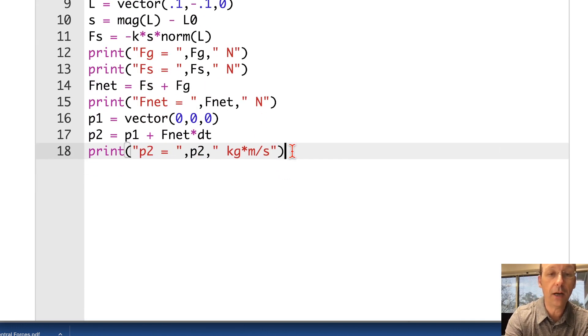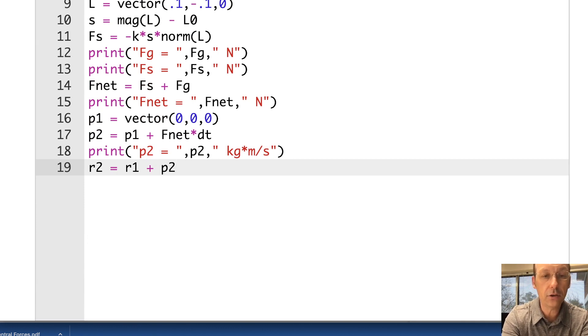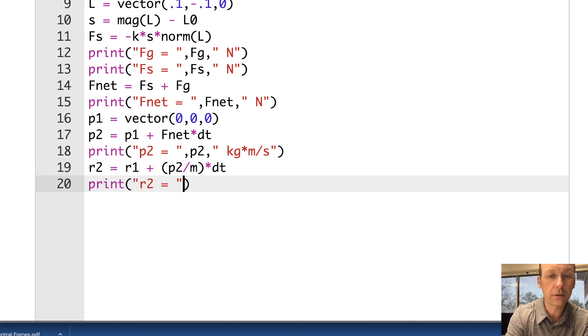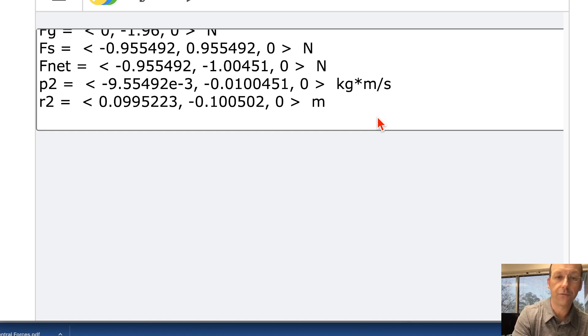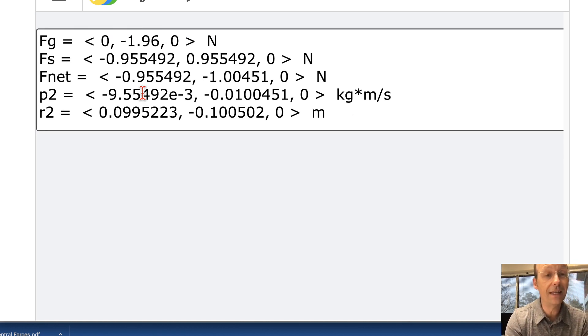Finally, I want to find my final position. R2 is equal to R1 plus P2 over M times DT. Print R2 equals R2 meters. Done. That's the final position. And you'll notice it did not move a ton. It was at 0.1, negative 0.1. So because I had such a small time interval, my momentum is very small. My change in position is very small. So that makes an approximation reasonable that the force is constant, and I can use the final momentum.